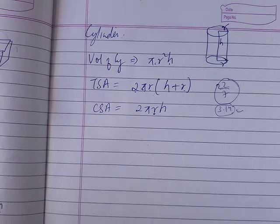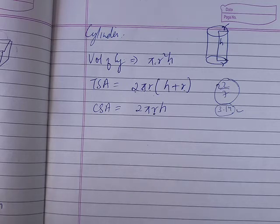These are the formulas for cube, cuboid and cylinder - volume, total surface area and curved surface area. Use these formulas in the exercises. That's all, thank you.